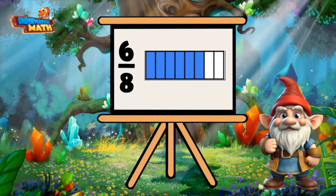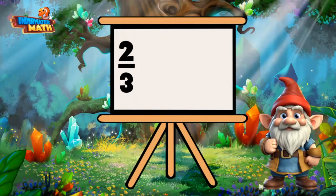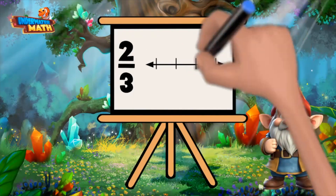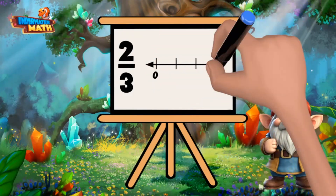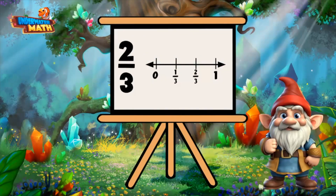Tomorrow I will spend two-thirds of the day selling the crystals to make money for our fraction forest. Let's show two-thirds on a number line model. Here is our number line, and we can cut it into three pieces to represent thirds. To show two-thirds, we need to move two tick marks down the number line: one, two. Here is two-thirds of the number line.